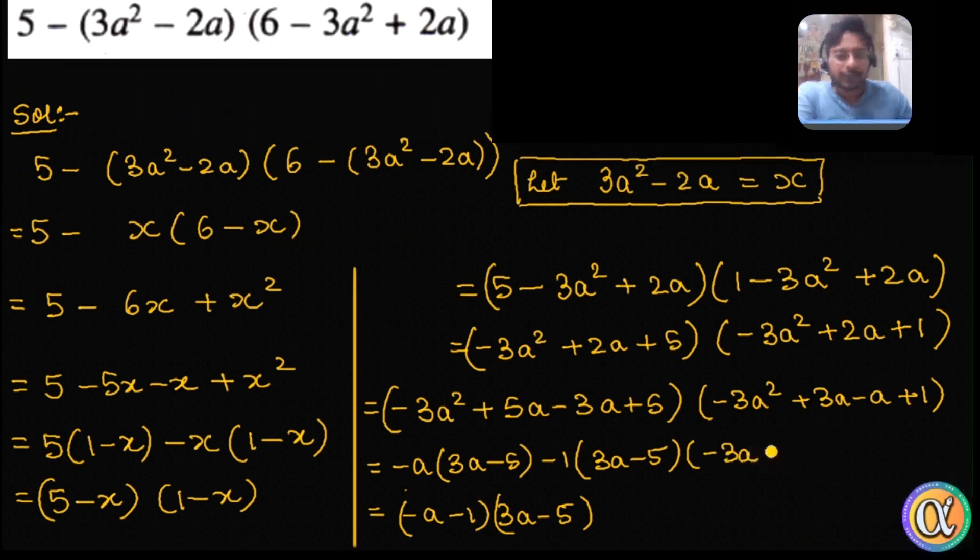Yes, minus 3a is common, so inside the bracket we get a minus 1, then again minus 1, a minus 1. So this is minus 3a minus 1, and a minus 1.